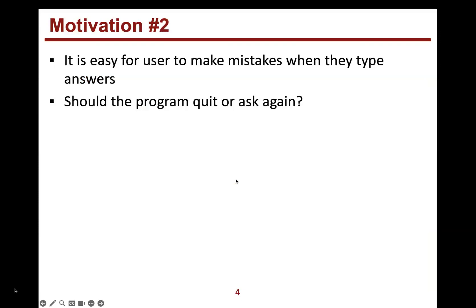Another motivation for using loops is that it's easy for a user to make mistakes when they type answers. We're going to ask them for something — maybe we want a yes or no answer — and they answer something other than Y or N. Should our program just quit, or should we ask again? We learned in branching that we can use an if: if it equals Y, then we do something; if it equals N, we do something else.